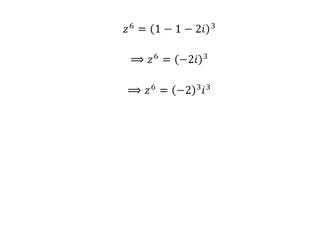We can rewrite the above statement as z raised to the power of 6 is equal to cube of minus 2 times cube of i. Cube of minus 2 is minus 8, and we can rewrite cube of i as square of i times i. As we know square of i is minus 1, thus z raised to the power of 6 is equal to minus 8 times minus 1 times i.